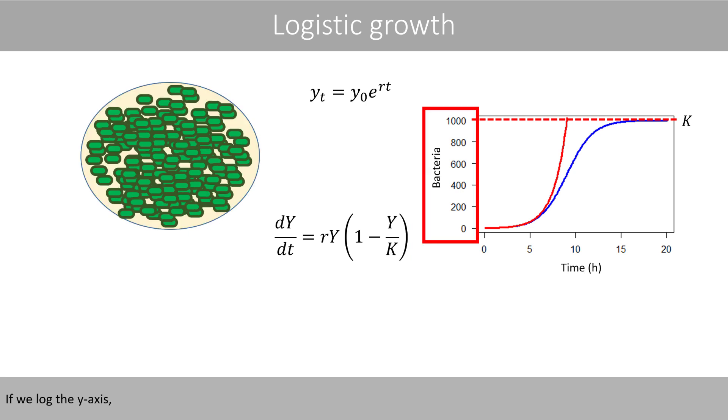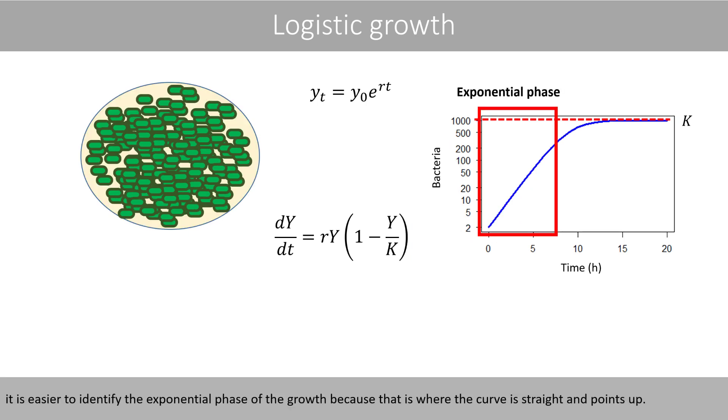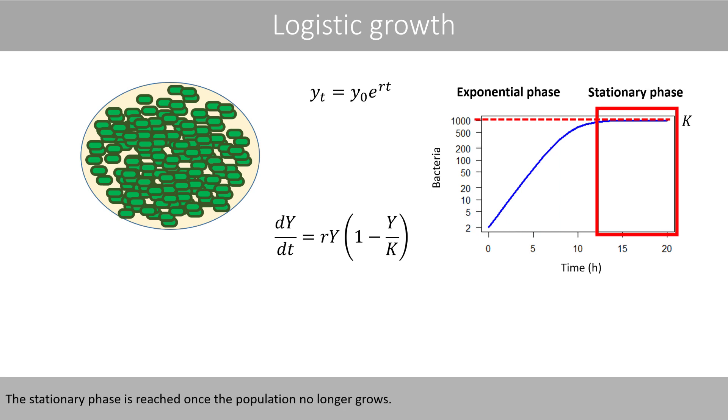If we log the y-axis, like this, it is easier to identify the exponential phase of the growth, because that is where the curve is straight and points up. The stationary phase is reached once the population no longer grows.